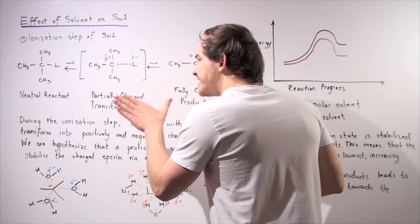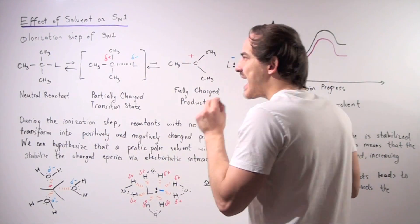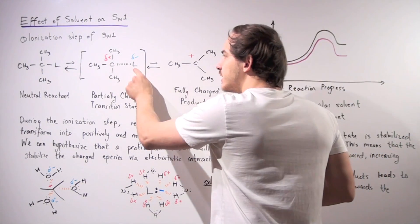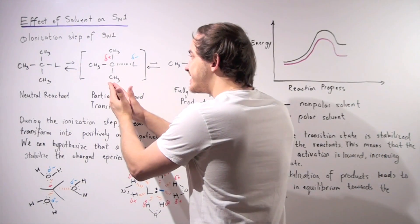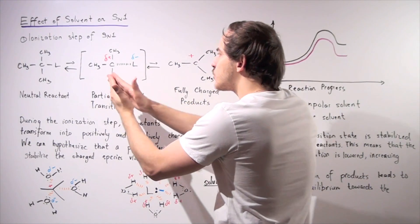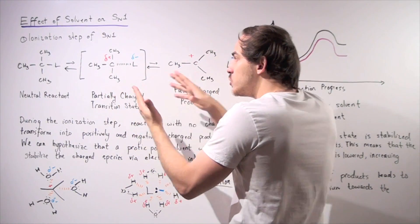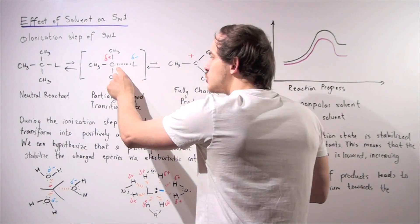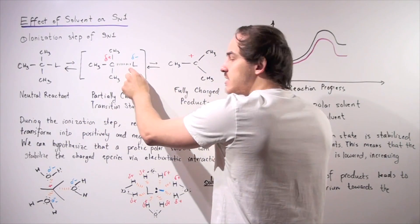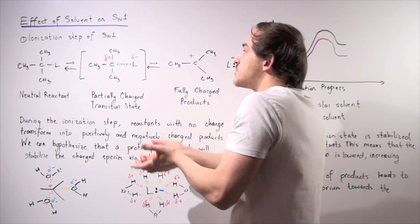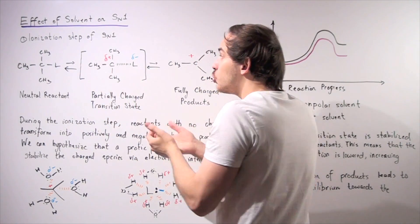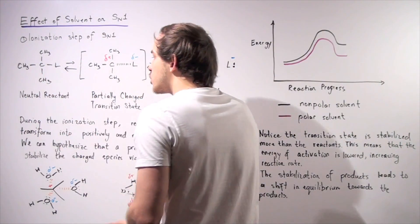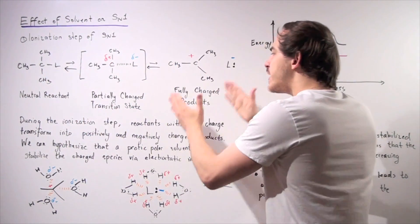We also have a transition state. The transition state has a partial positive charge on the carbon and a partial negative charge on the leaving group, because in the transition state our bond is beginning to break. As it dissociates, the leaving group takes the two electrons — these electrons slowly approach that atom, making it partially negative, while the carbon loses that electron density, becoming partially positive. So we go from zero charge to partial charge to full charge.